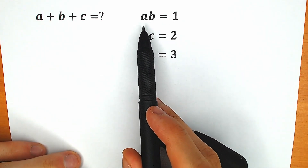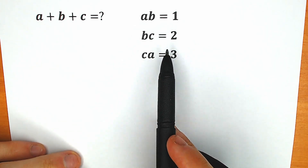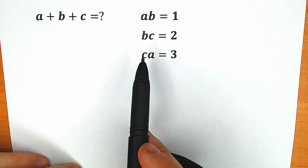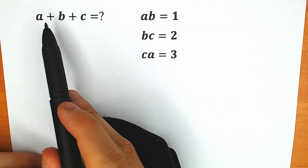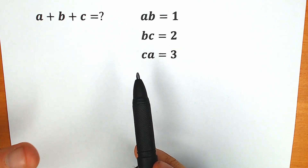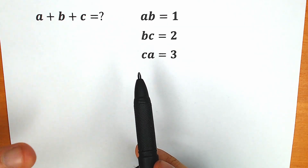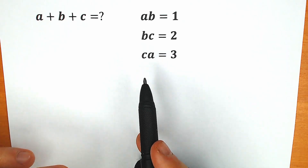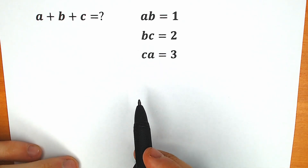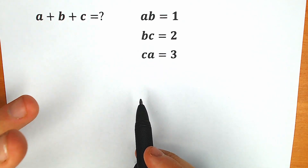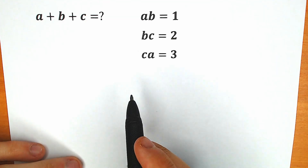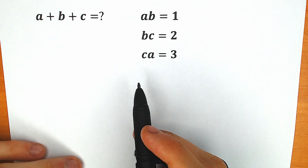We know that ab equals 1, bc equals 2, and ca equals 3, and we need to find the sum a plus b plus c. I see this question multiple times in entrance examinations, so let's try to solve it correctly and step by step. You can also write your approach down in the comment section, and then we will check the answers.